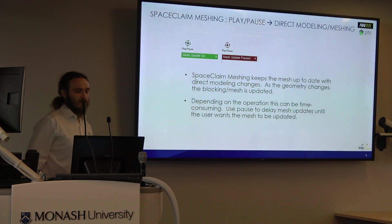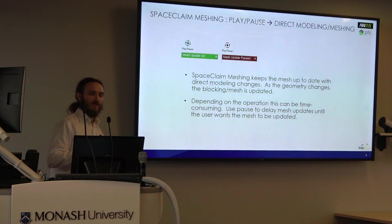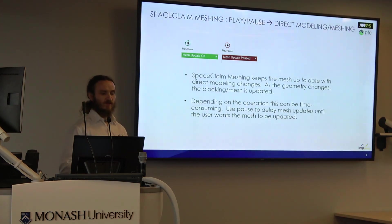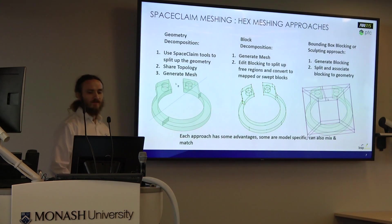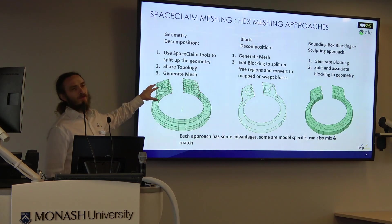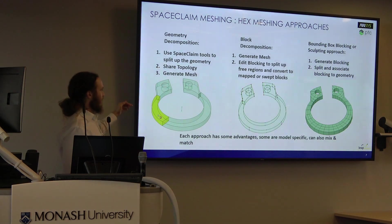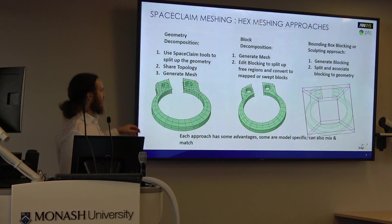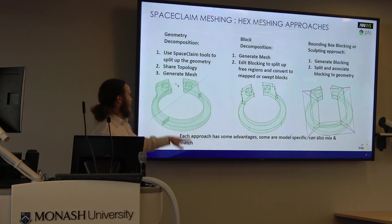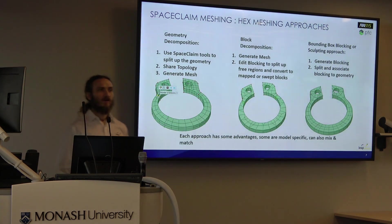The first one is this play/pause button. This is different from most meshers in that it live-updates as you make changes to your mesh. If that annoys you, or if your model is so big it's slowing things down, you can hit pause, make a few changes, and then hit play again. These are the three different meshing techniques. The traditional one we've used in Workbench takes our geometry and splits it up into sweepable regions — possibly in Design Modeler or SpaceClaim — trim them into a multi-body part and sweep to get a good quality mesh.